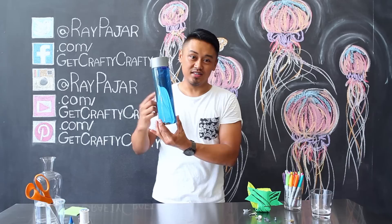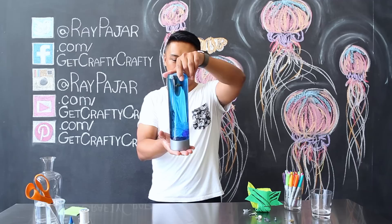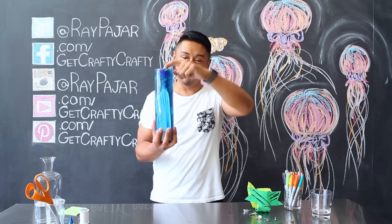The reason I put the Finding Nemo clownfish inside is so that you can turn this into a fun little game by flipping it back and forth and trying to see if you could land the clownfish right on top of the jellyfish.